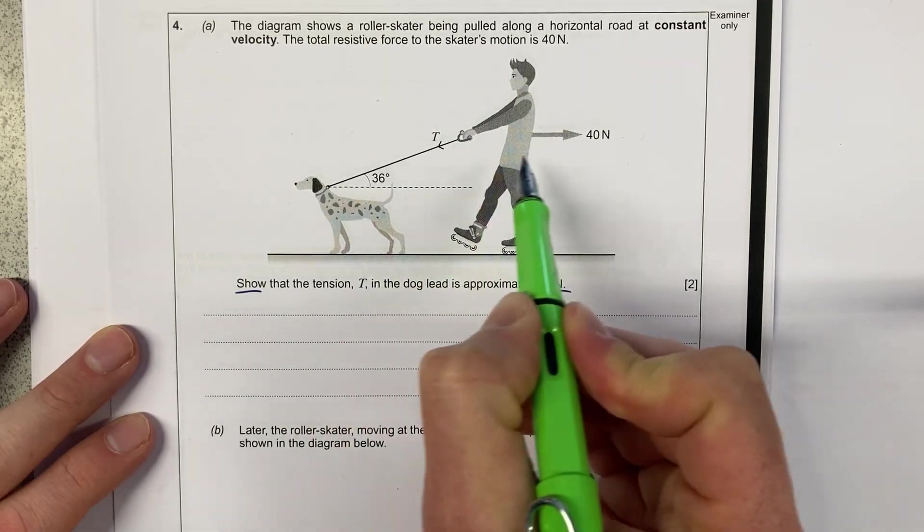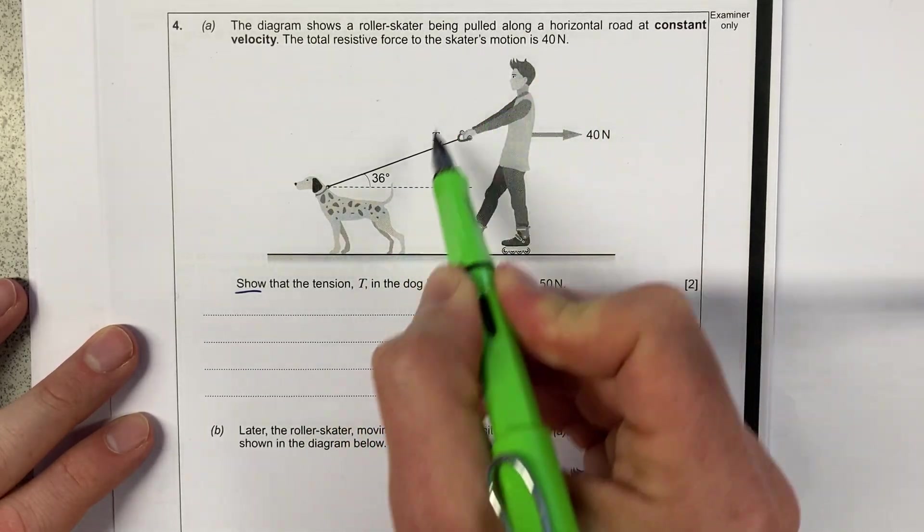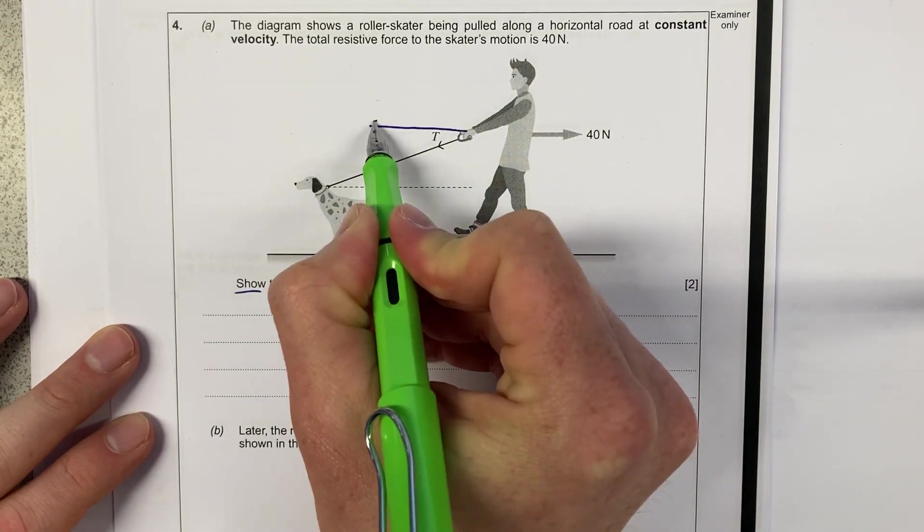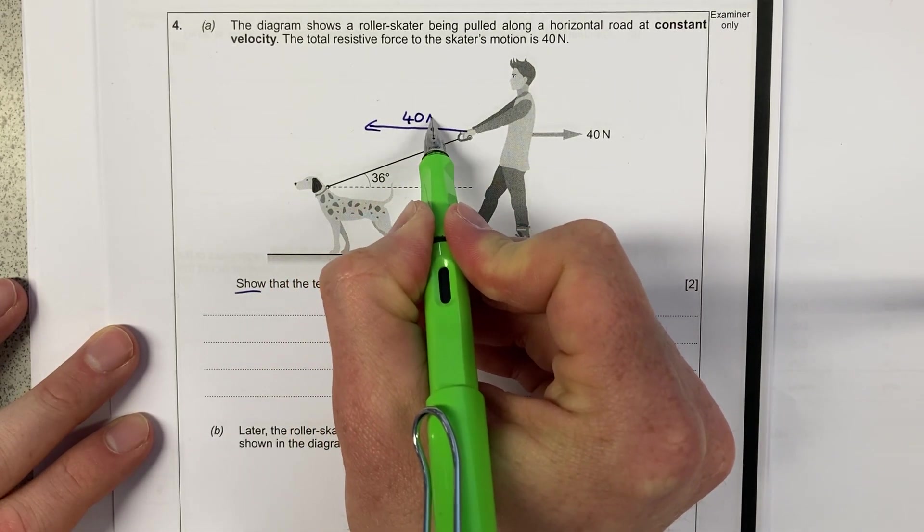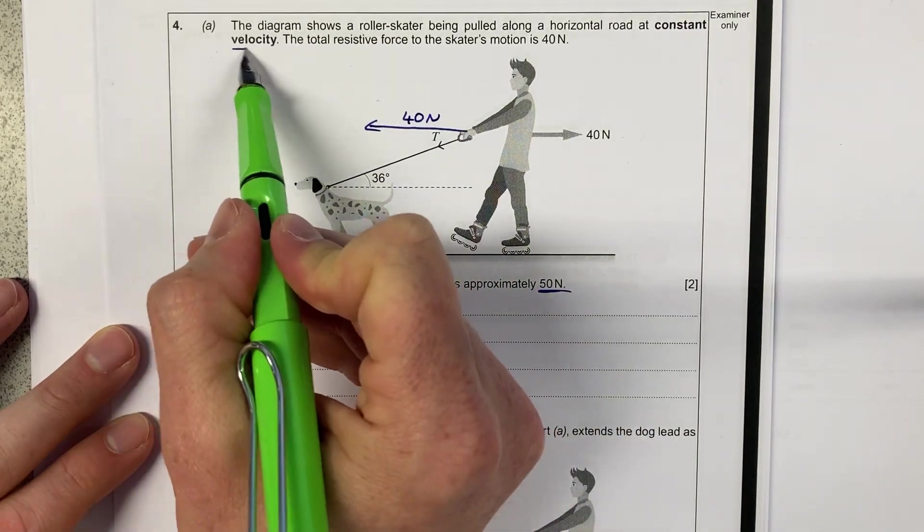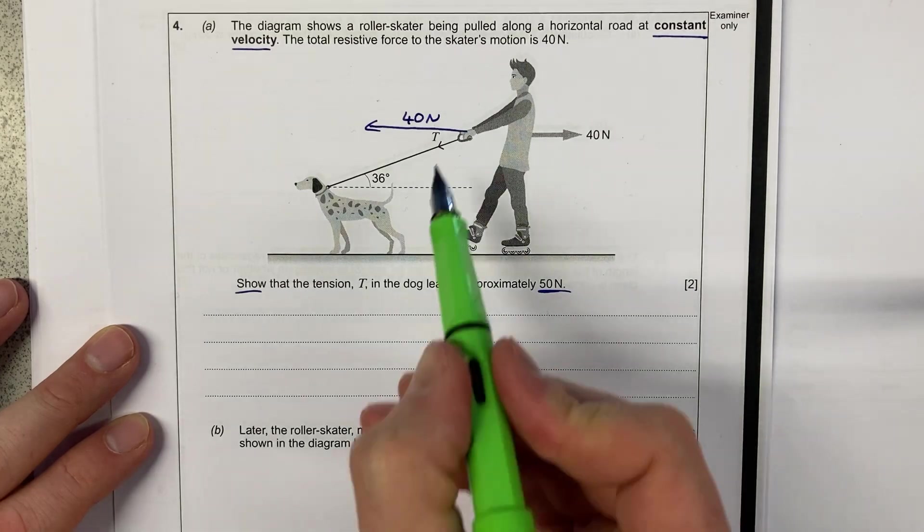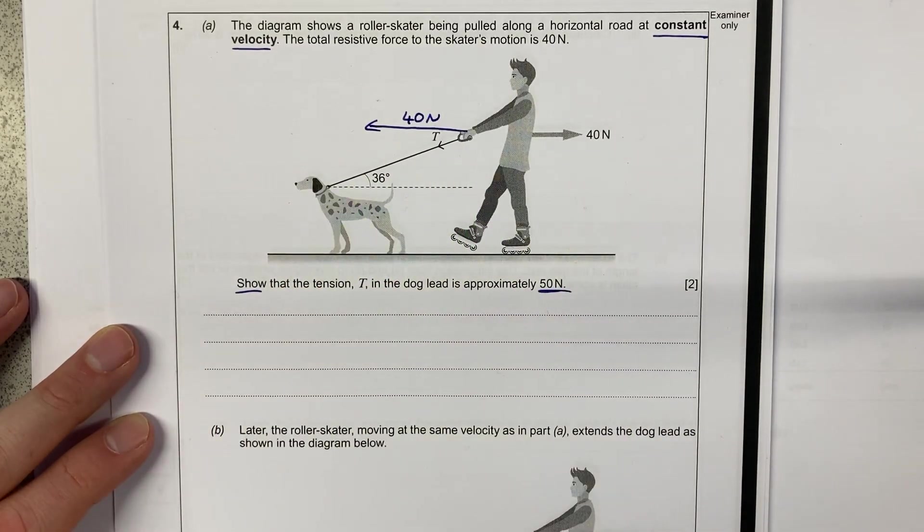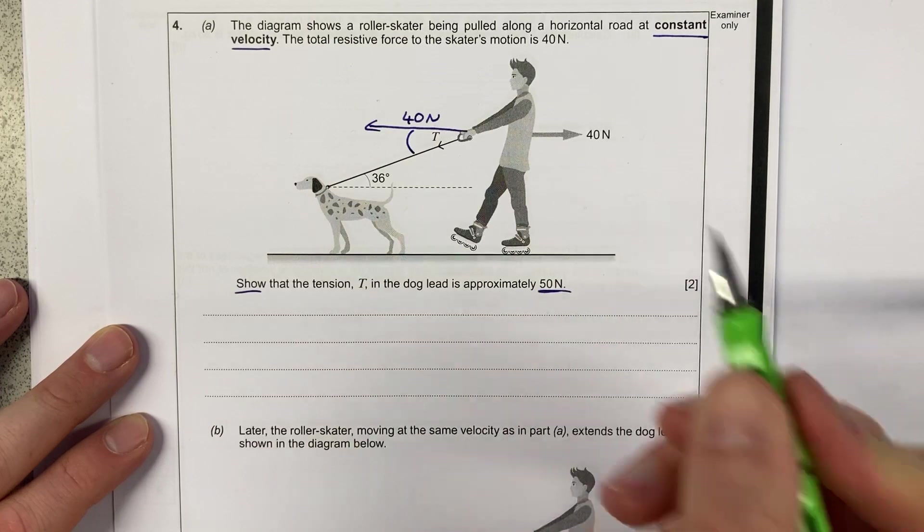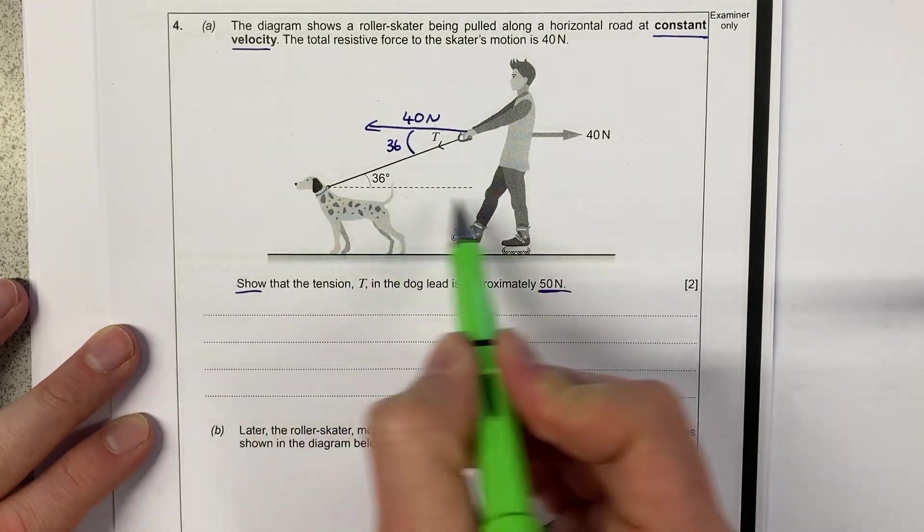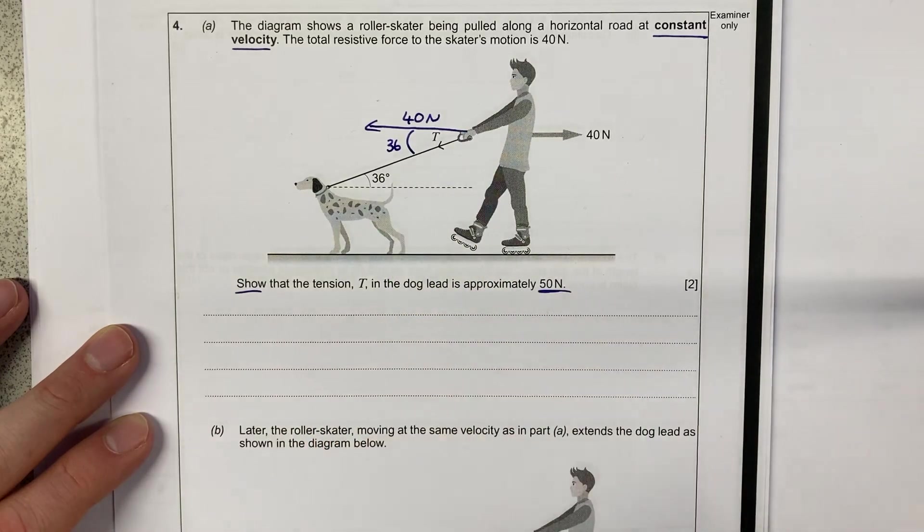We need to just think for a moment that if this character is in equilibrium, there must be a force of 40 newtons in this direction. And it tells me he's in equilibrium because we're at constant velocity in the stem of the question. So I know that there's a horizontal component here of 40 newtons. And because I studied maths at GCSE, I know that this angle here is 36 because these are angles in a Z and they're the same as each other.